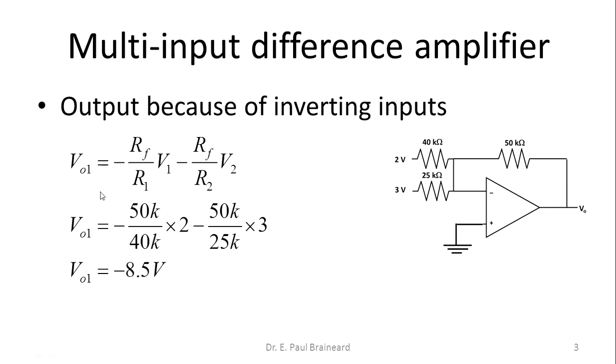The expression for the output voltage is minus Rf by R1 into V1 minus Rf by R2 into V2. Because this is a very simple problem, I will take these two voltage sources at a time.